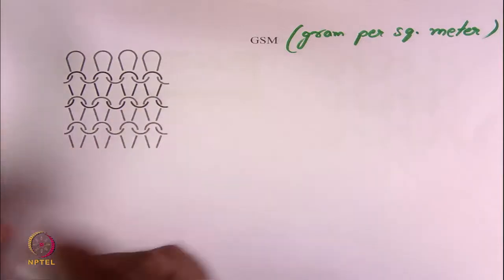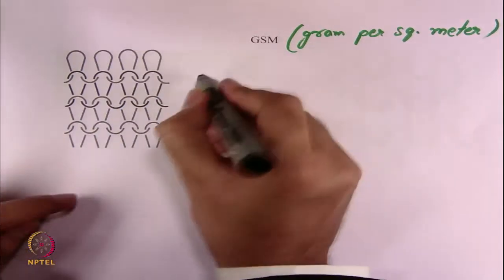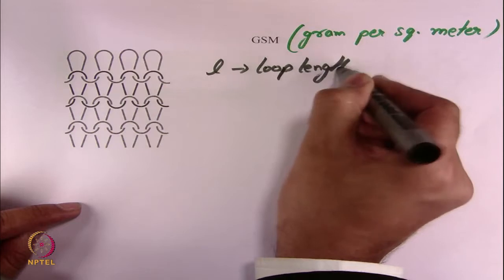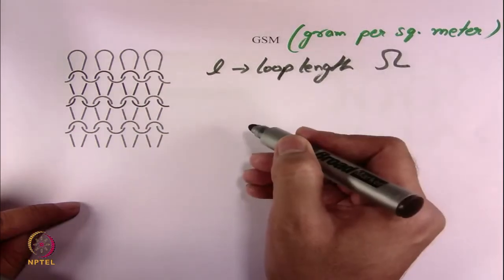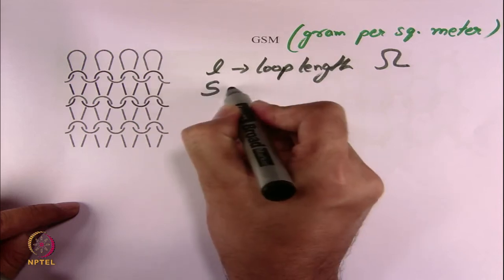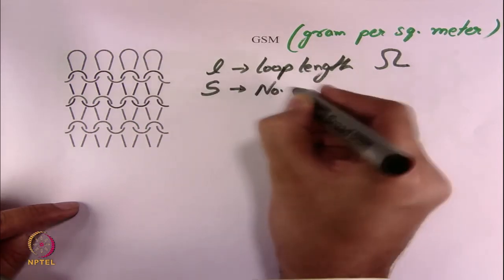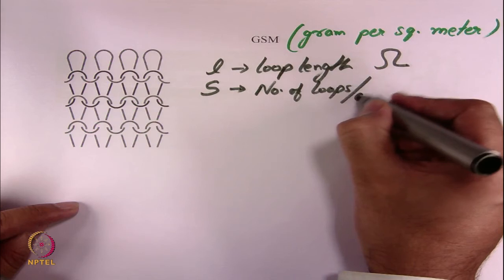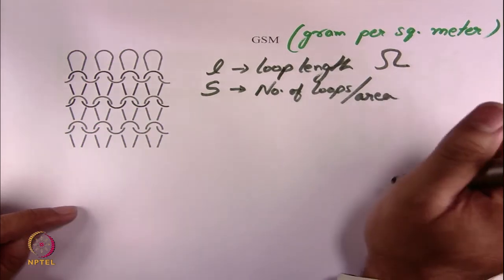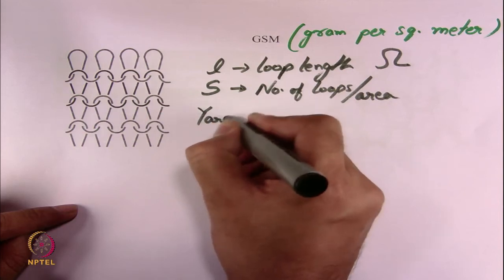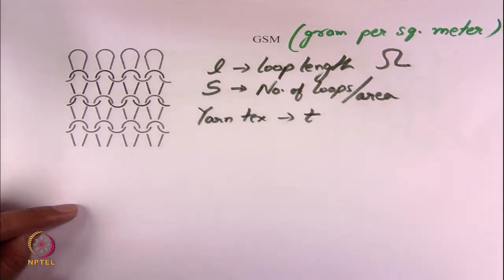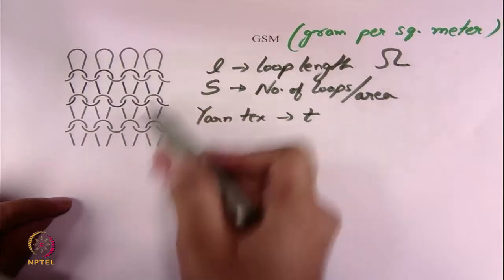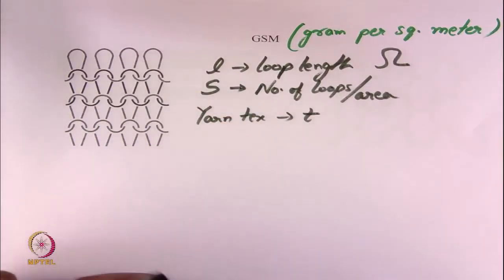To find the GSM, there are 3 quantities we basically need. First one is loop length — the length of one loop. Second is stitch density, which is the number of loops per unit area. And third is yarn tex, let's denote this as T. If you know these 3 quantities, you can find out the GSM.